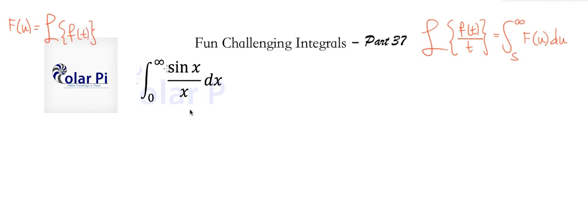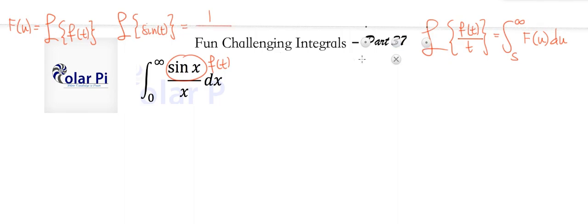Here we would like sin(t) to be f(t), and therefore we need to know the Laplace transform for sin(t). In my videos on Laplace transforms, I show you how to do the Laplace transform for sin(t), and it's equal to 1 over 1 plus u squared. With this handy, we can now look at the Laplace transform for sin(t) over t.